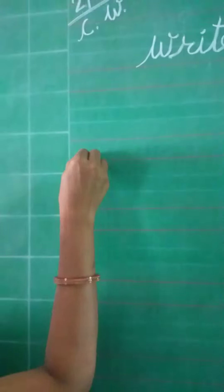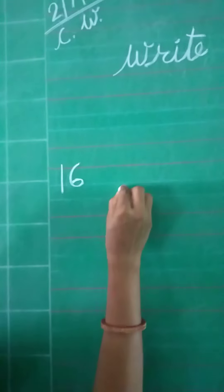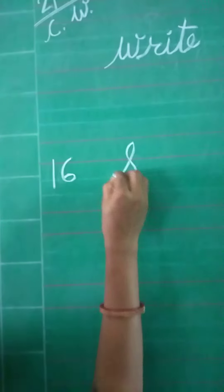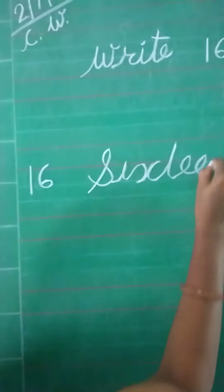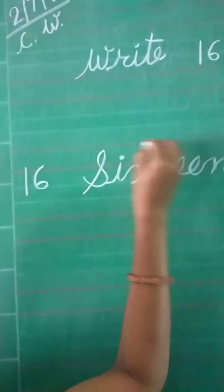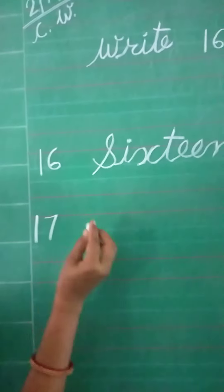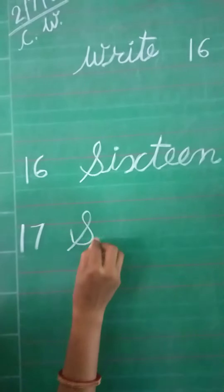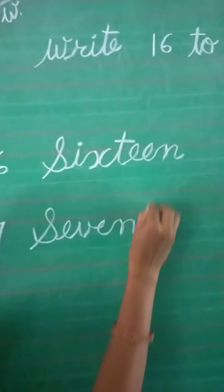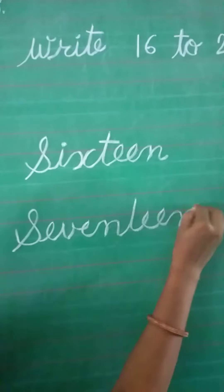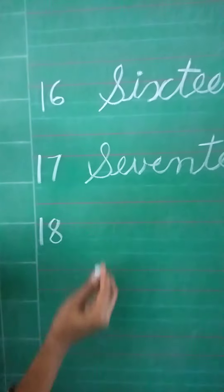16 number spelling — write a spelling: S-I-X-T-E-E-N, 16. Write 17 number spelling: S-E-V-E-N-T-E-E-N, 17. 18 number.